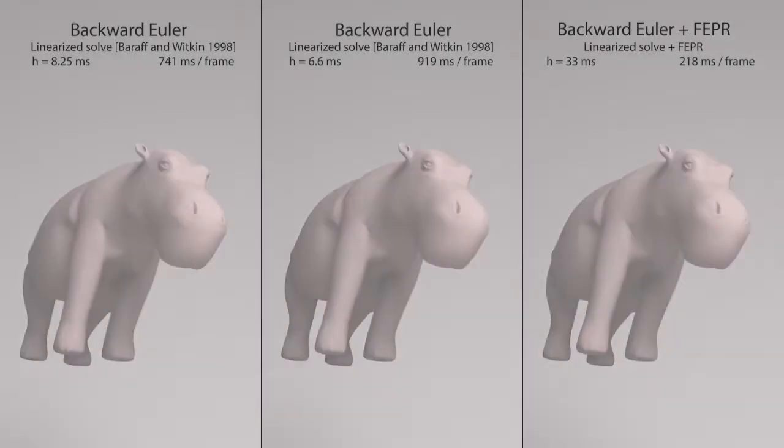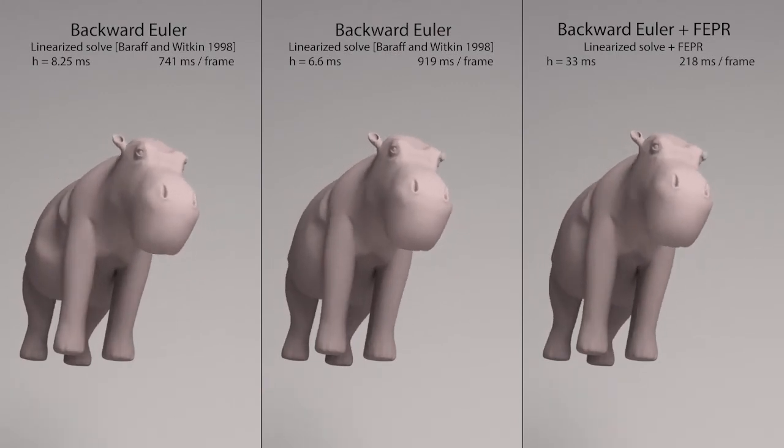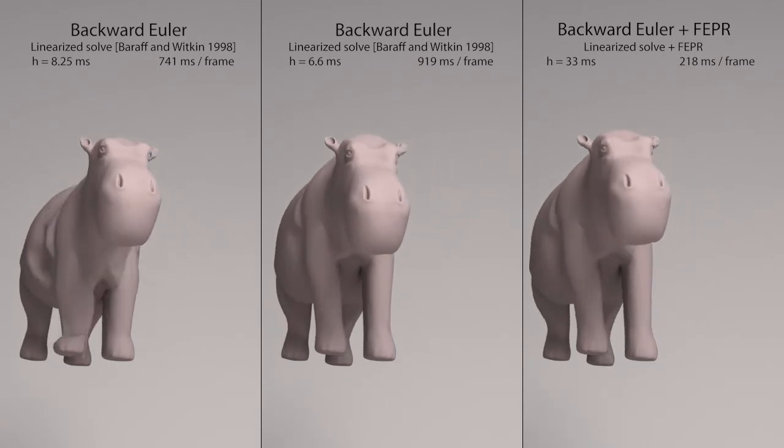Reducing the time step is the standard way of correcting the artifacts of numerical integration. A time step of 8.25 milliseconds is not enough to save the hippo. 6.6 milliseconds works, but is much more expensive per frame.